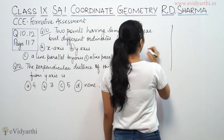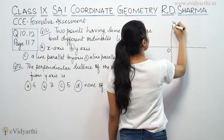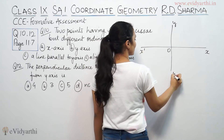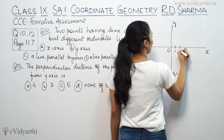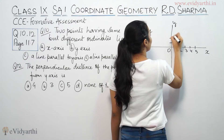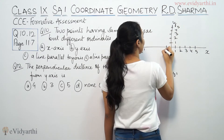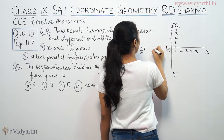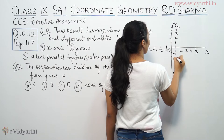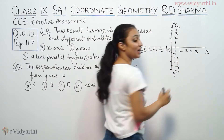So this is the coordinate axis. This is the origin, this is y, this is x, this is x-prime, this is y-prime. I'll mark the points: 1, 2, 3, 4, 5 on the positive side and minus 1, minus 2, minus 3, minus 4, minus 5 on the negative side along both axes.